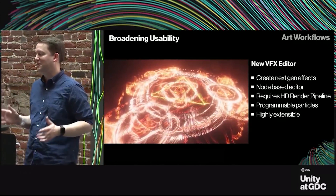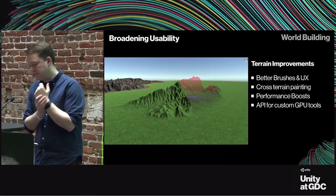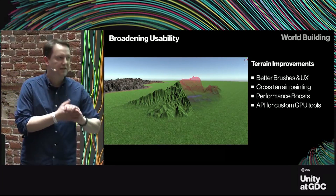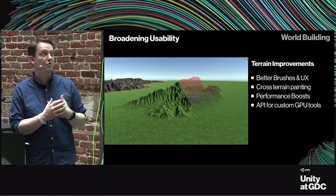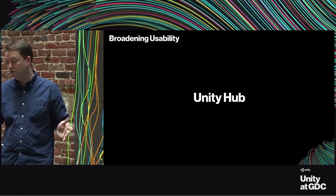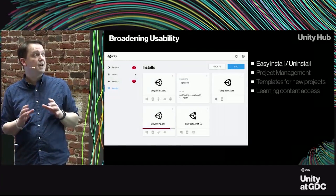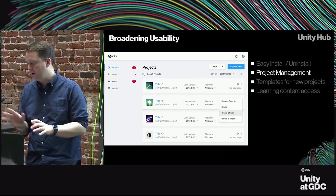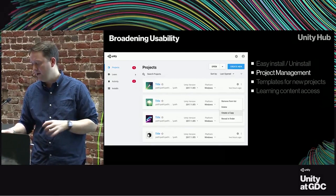And finally, the terrain system is also getting an update. We don't know much yet, but apparently it's getting a UI overhaul with better brush painting, as well as a performance boost — something that is definitely needed at this point. Also, Unity is working on a new launcher called Unity Hub. It's currently available in preview and will definitely be a nice addition, especially for those working with multiple versions of Unity.